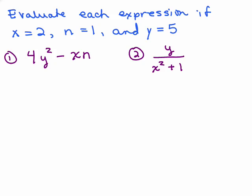My first suggestion is any time you have something with exponents, that you write it as multiplication first. So that's what I'm going to do first for number 1. I'm going to write y squared as y times y. So I have 4 times y times y. And remember, xn means x times n.